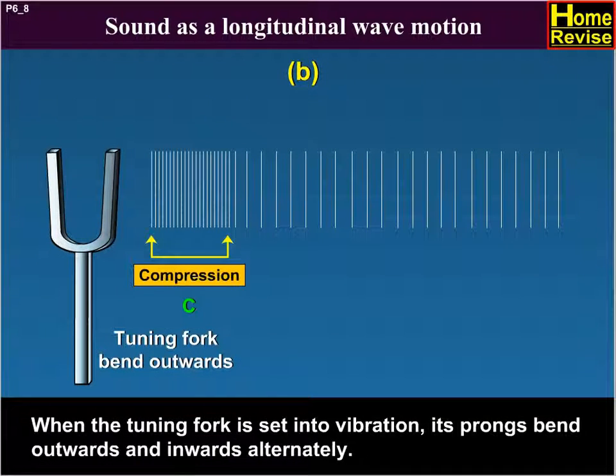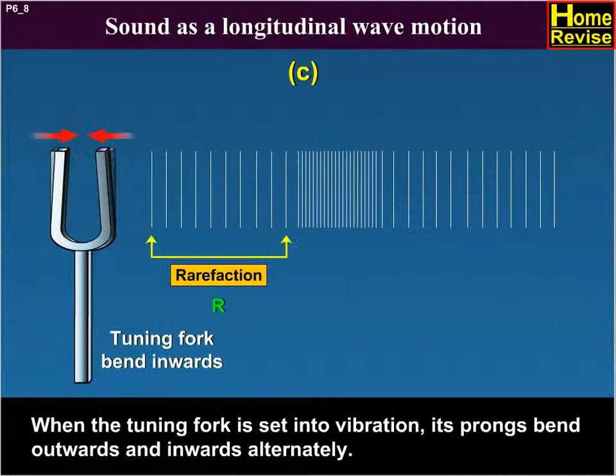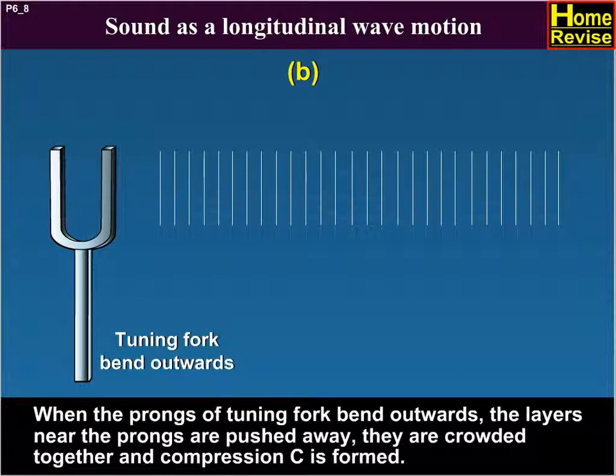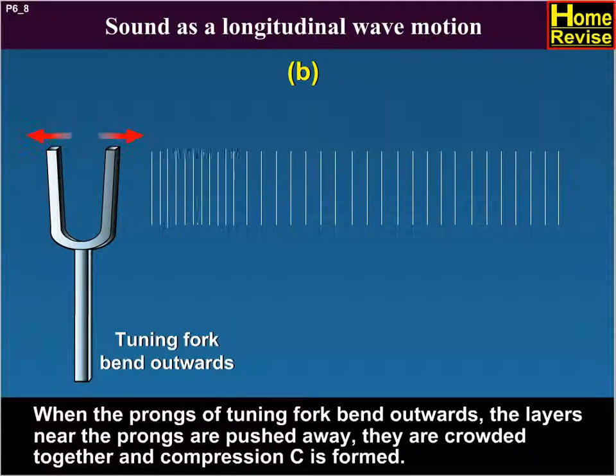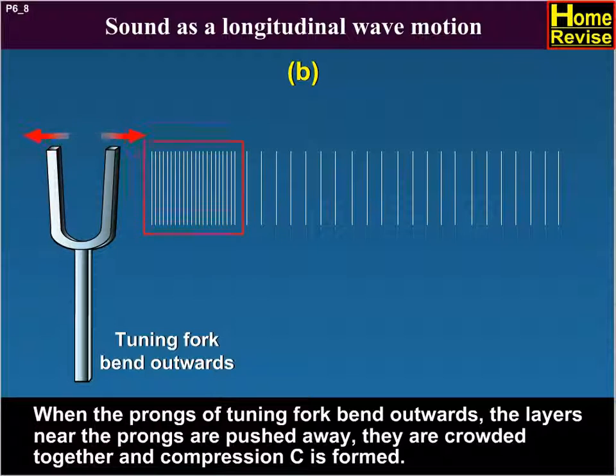When the tuning fork is set into vibration, its prongs bend outwards and inwards alternately. When the prongs of tuning fork bend outwards, the layers near the prongs are pushed away, they are crowded together, and compression C is formed.